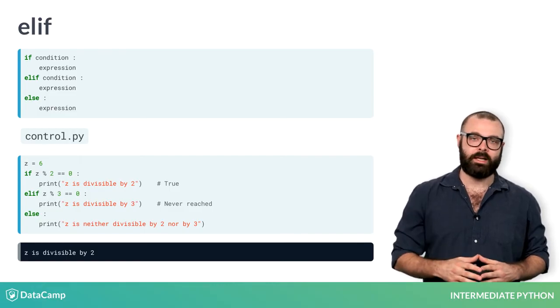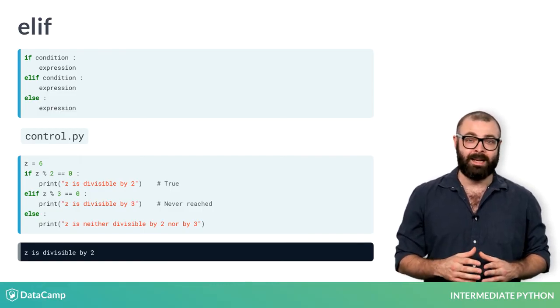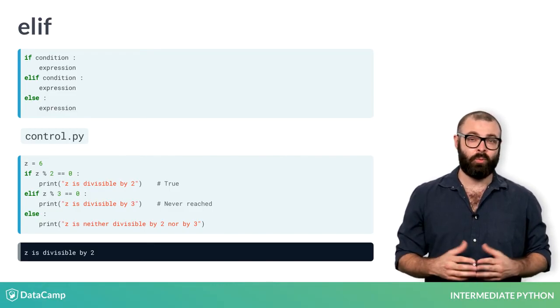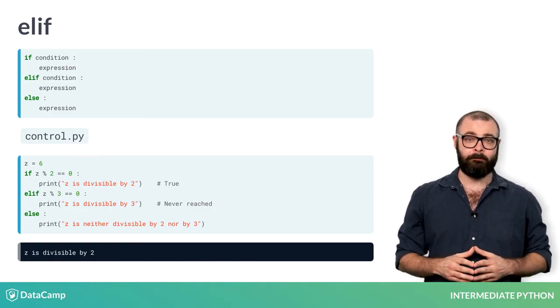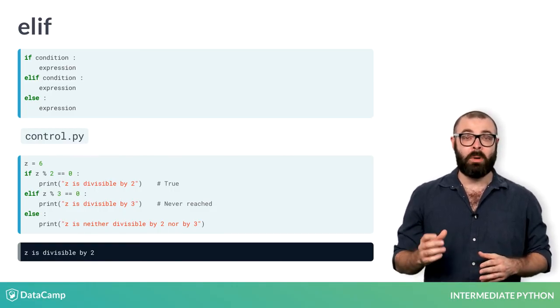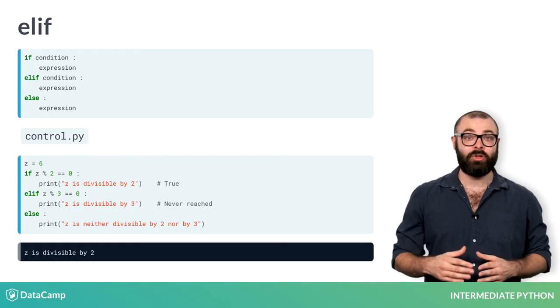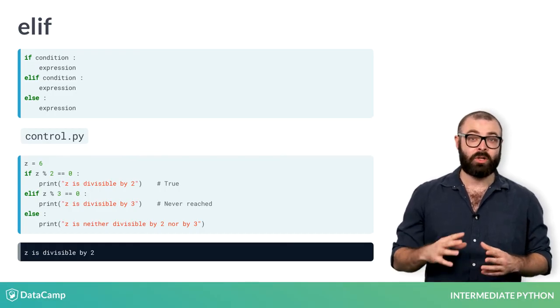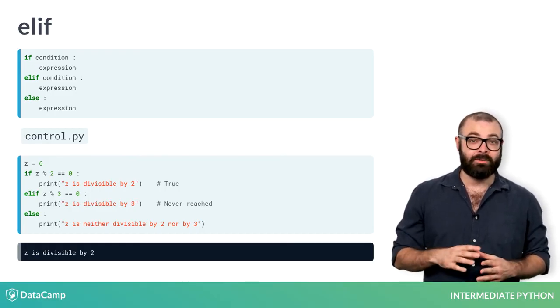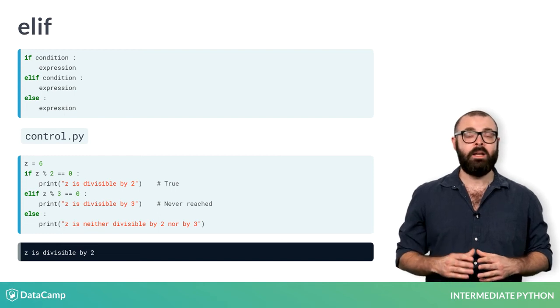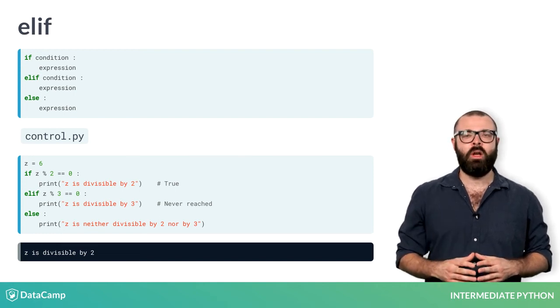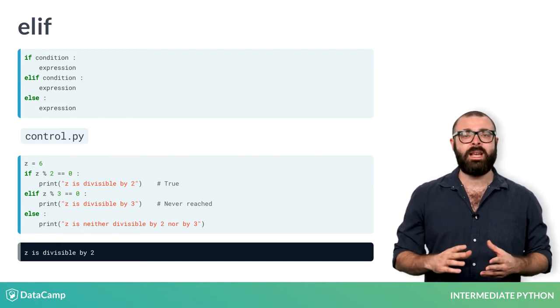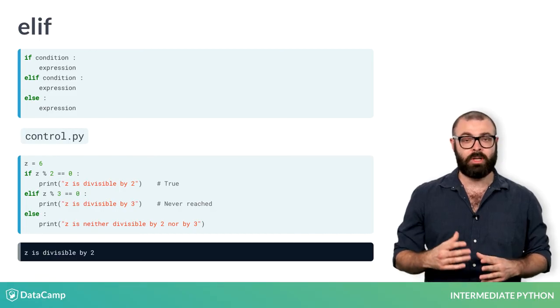Suppose now that z equals 6. Both the if and elif conditions hold in this case. Will two printouts occur? Nope. As soon as Python bumps into a condition that's true, it executes the corresponding code and then leaves the control structure after that. This means the second condition, corresponding to the elif, is never reached, so there's no corresponding printout.